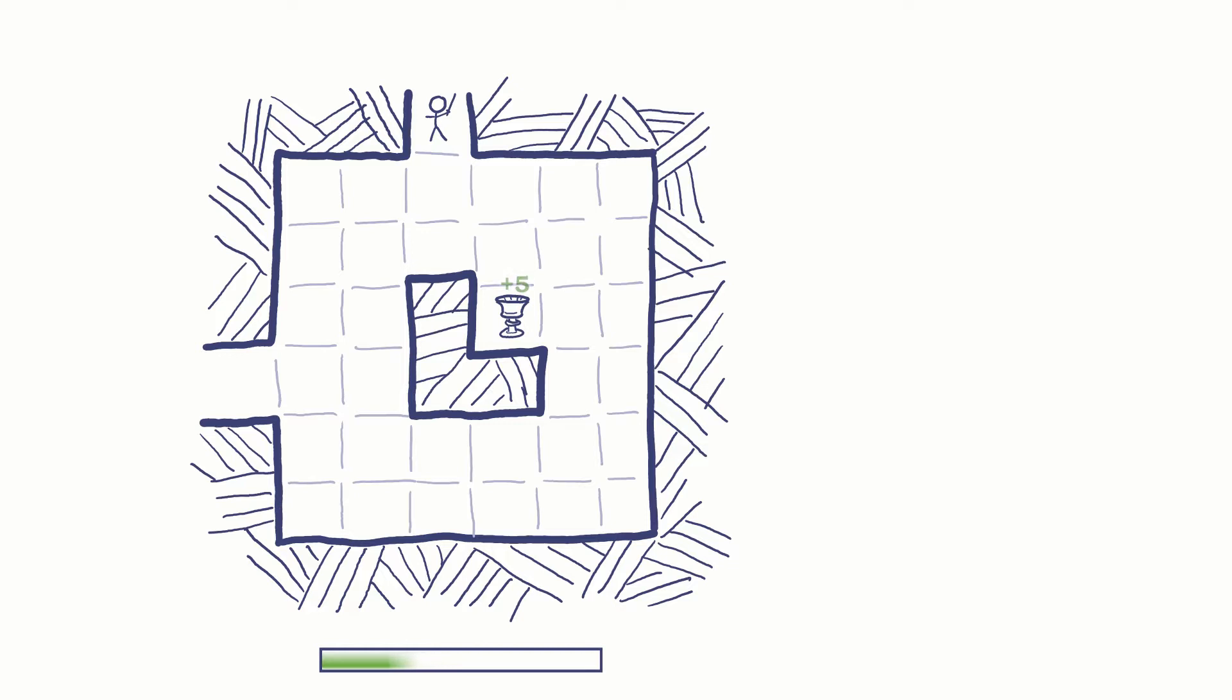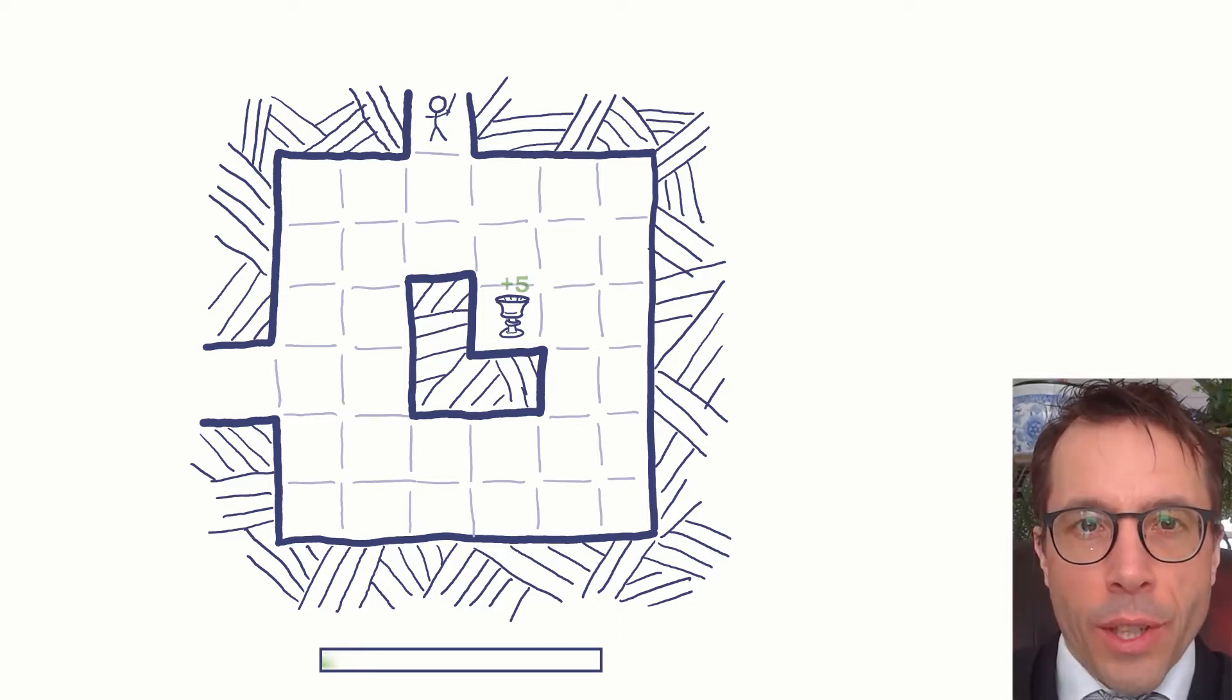Do you just go to the exit as quickly as possible, or do you make a detour to pick up a health potion on the way? We're algorithmists, so let's turn this into a graph problem in the usual way.